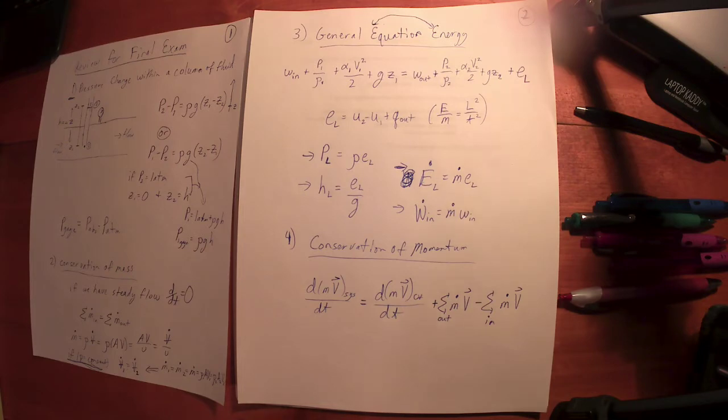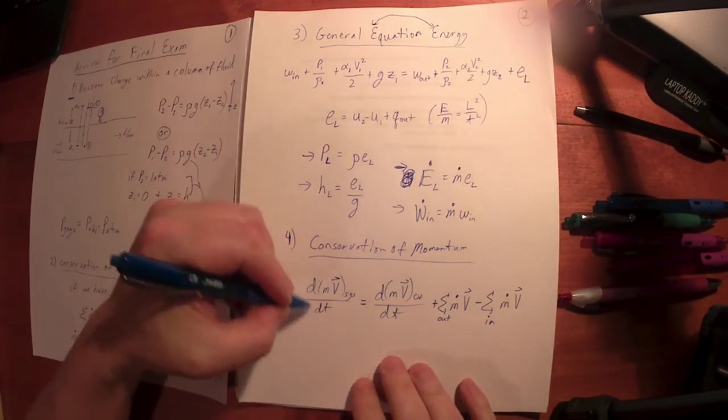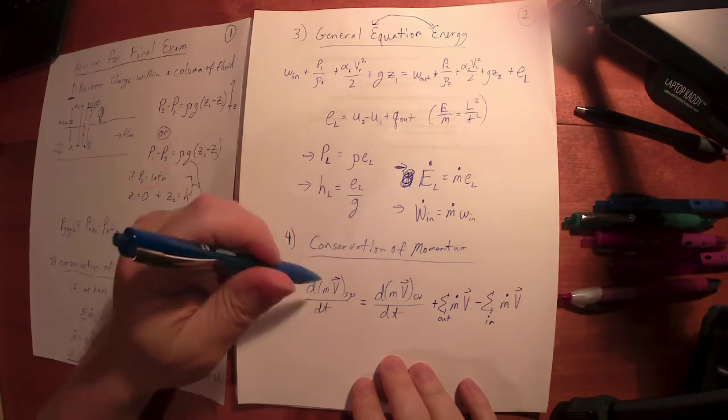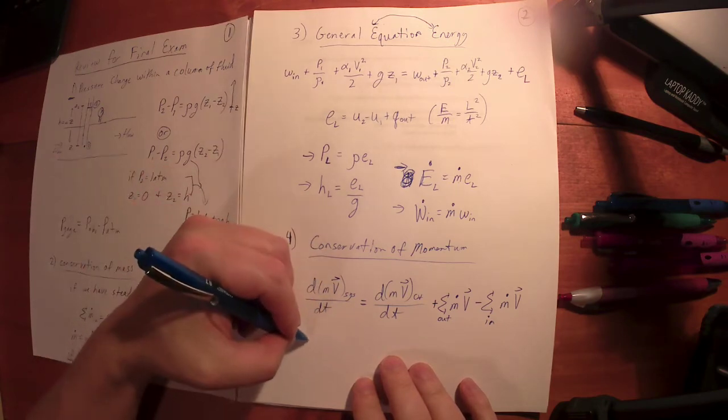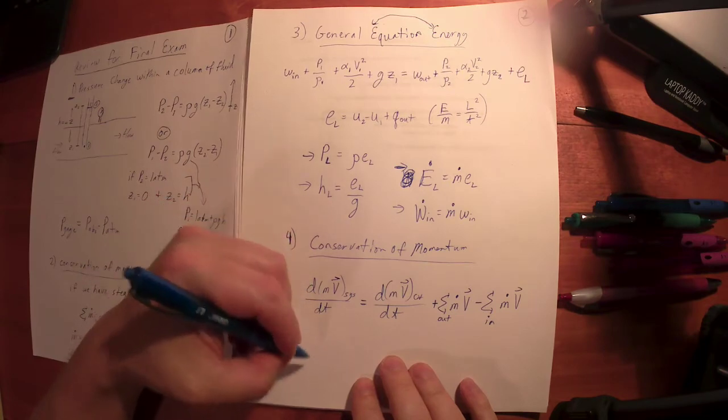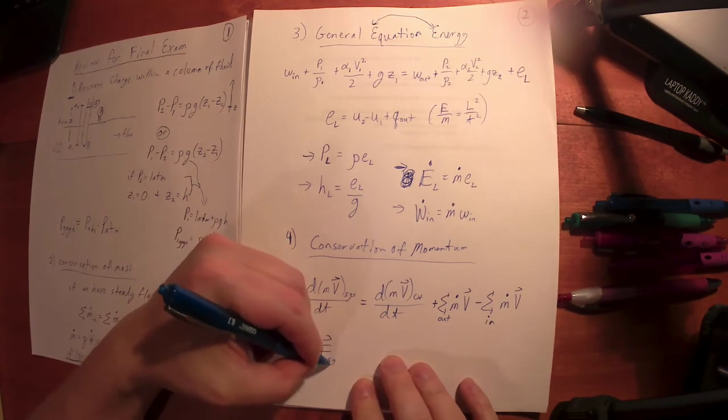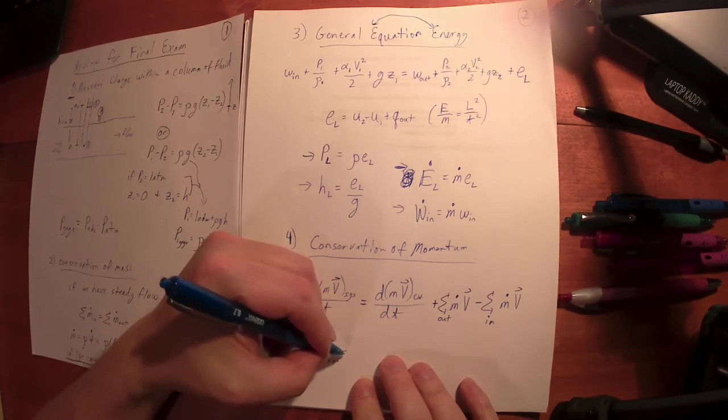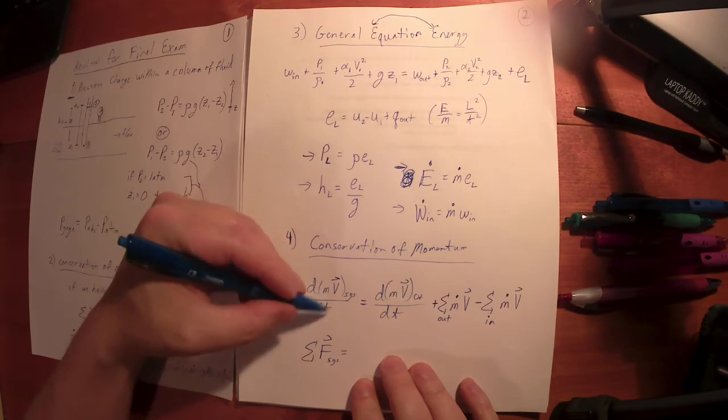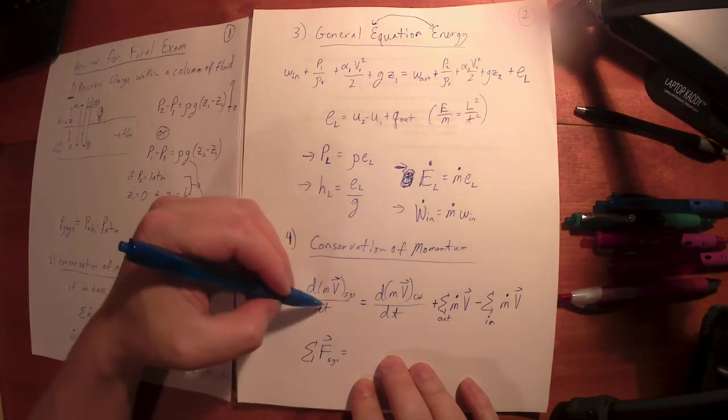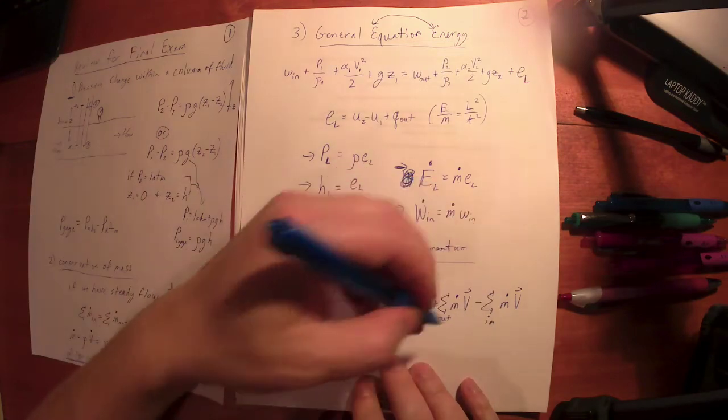If I take the momentum change for the control volume, plus the momentum change for all of the mass moving through that control volume, this entire sum represents the change in mass for all of the particles moving through. And that's Reynolds transport theorem, which we talked briefly about in chapter four. I didn't do a whole lot with it, but this is applied to specifically conservation of momentum, and it works out very well for it.